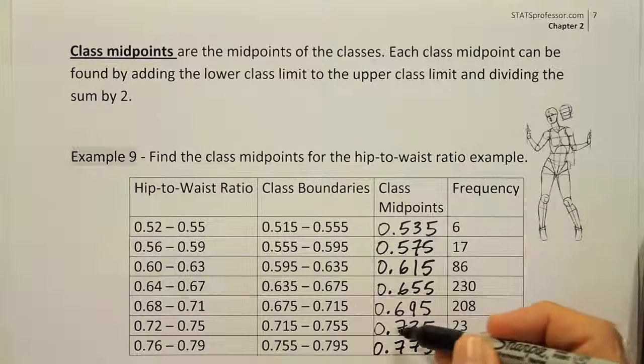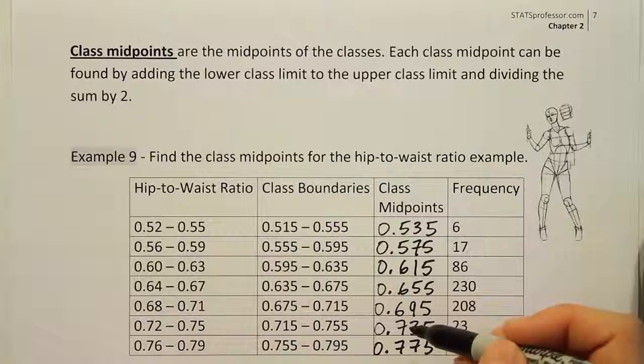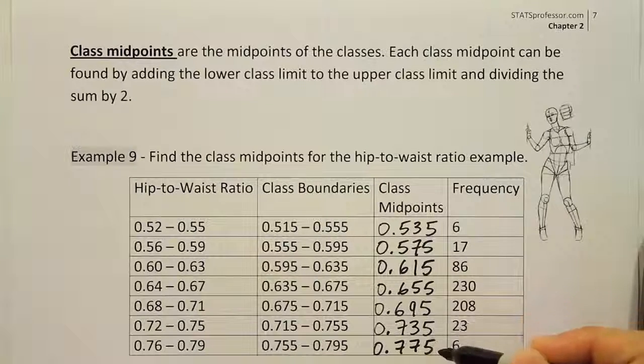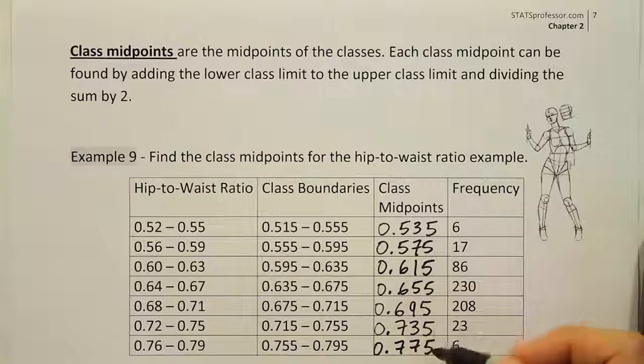You could also confirm that .04, the class width that we described, that difference between those two numbers, added to this number gives you .775. So there's at least three ways to find the class midpoints, and essentially any one of them is perfectly suitable.